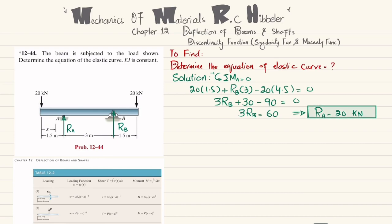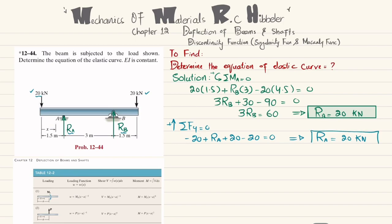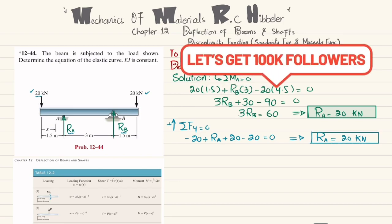Now we find R_A using the second equation of equilibrium: sum of all forces in the y-direction equals zero, with upward forces positive. We have +20 + R_A + R_B − 20 = 0. Substituting R_B = 20: 20 + R_A + 20 − 20 = 0, giving R_A = 20 kilonewton.